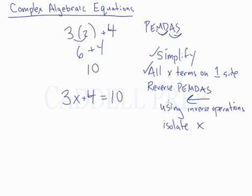Now we have to do reverse operations, reverse PEMDAS using inverse operations. So if this were a number, we would do 3 times that number and then add 4. So the last thing we would do would be to add 4. So going backwards, the first thing we're going to do is subtract 4. So the first thing we're going to do is subtract the 4. So that's gone. And on the left, we just have 3x. And on the right, 10 minus 4 is 6.